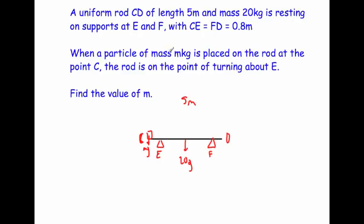When a particle of mass m kilograms is placed on the rod at C, its weight would be mg. The rod is on the point of turning about E. If you put a heavy weight here, the rod would lift up and tilt.